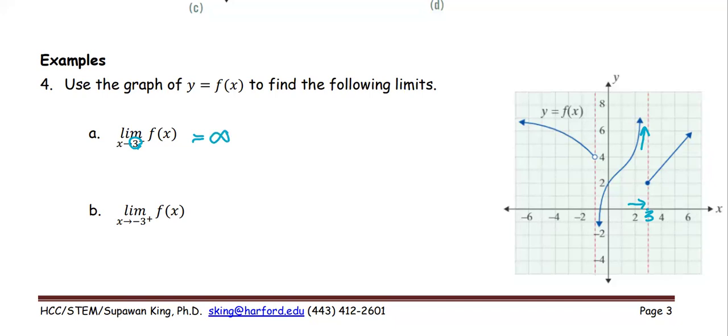At the second part, part B, as x approaches negative 3, look at negative 3. Negative 3 is right here, from the right side. So coming from the right and on the graph or the function, the graph approaching to that value, which is very close to the value 6. Let's say it's probably 5.6 or 5. It's about 5.6. That's the answer.